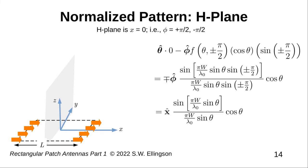Here's a normalized function for the H-plane. Again, this is quite simple to work out. And I recommend you do this yourself as a way to make sure you know what's going on. Here we see that the result is x-hat polarized, x-hat everywhere in the H-plane, and that the magnitude is a sinc function times cosine theta.